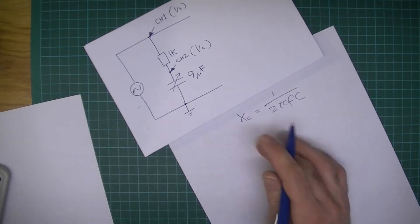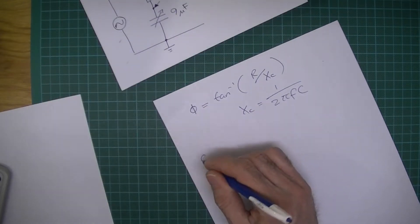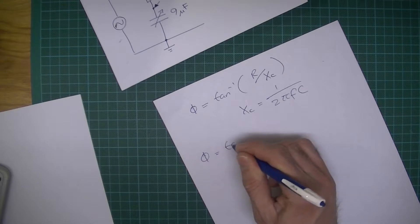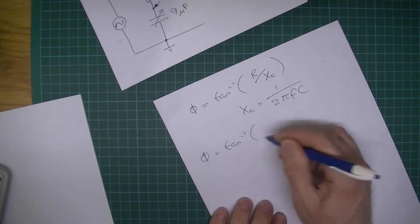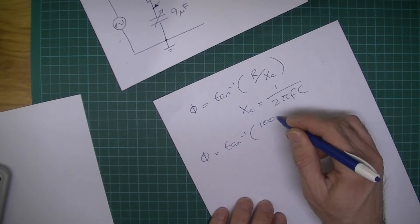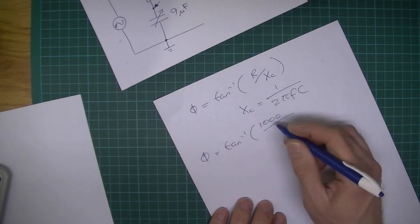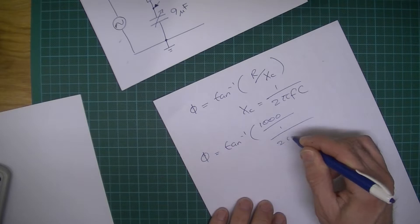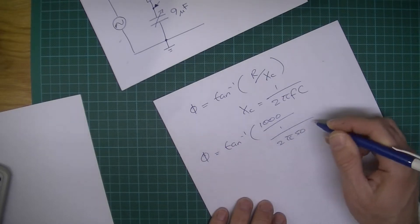So phase angle phi is going to be tan inverse. The resistance was a 1k resistor. Yeah, 1k resistor, and 1 over 2 pi, frequency 50 Hertz.